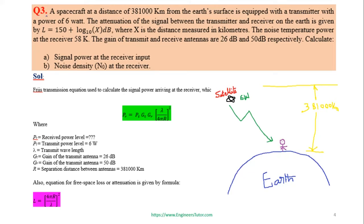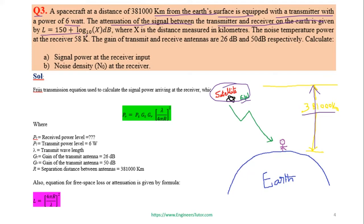Question three involves a spacecraft at a distance of 381,000 km from the Earth's surface, equipped with a transmitter of 6 Watts. The attenuation of the signal between the transmitter and receiver on Earth is given as L = 150 + log(X) dB, where X is the distance measured in kilometers.